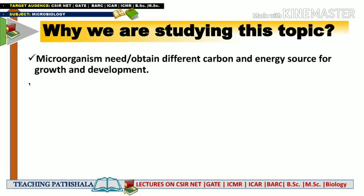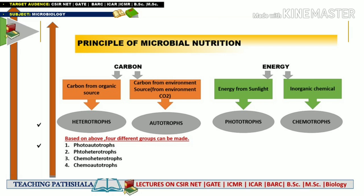According to the definition, microorganisms need to obtain different carbon and energy sources for growth and development. Just like plants and animals, microbes also need different conditions for their proper growth and development, and one of the most important conditions is the requirement of carbon and energy source. Depending upon the sources of carbon and energy, we categorize microorganisms into four categories.